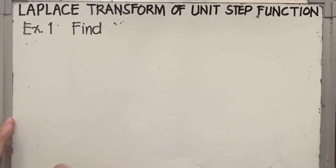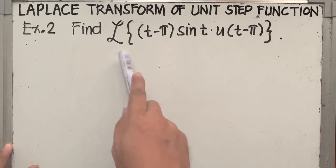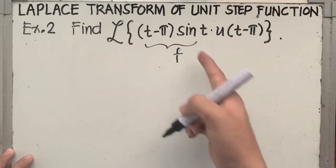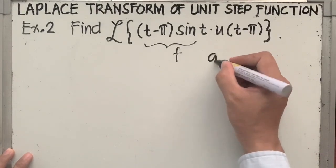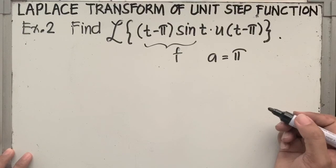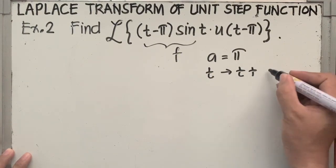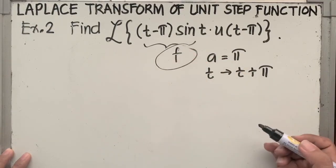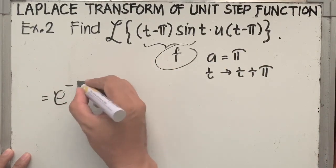Let's proceed to Example 2: find the Laplace transform of t minus pi times sine of t times u of t minus pi. The presence of u of t minus pi means this is a unit step function, and a here is equal to pi. The first step is to replace t by t plus a — that is, t plus pi in this case — in function f only.